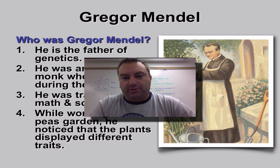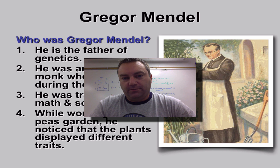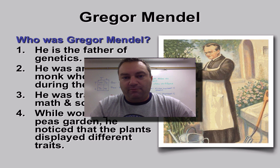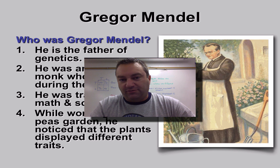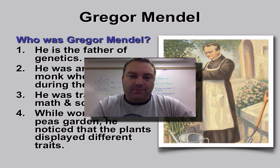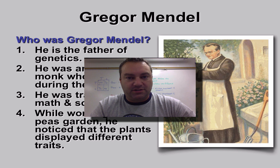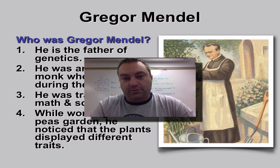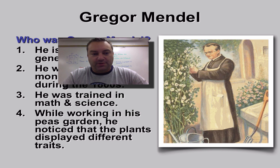In part 6 from chapter 11, we're going to look at Gregor Mendel, who is actually the father of modern genetics. It's from his work we get things like dominant, recessive, Punnett squares, etc. So without further ado, let's get down to business.